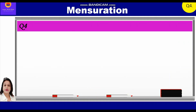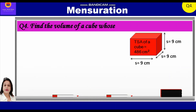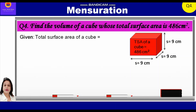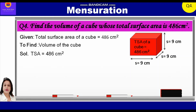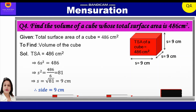Now let's take up question number 4. Find the volume of a cube whose total surface area is 486 cm². Given: total surface area of the cube is equal to 486 cm², and we have to find the volume. Total surface area = 486 cm² implies 6S² = 486. Therefore, S² = 486/6 = 81. Now S = √81 = 9 cm. So the side of this cube is equal to 9 cm.